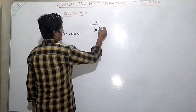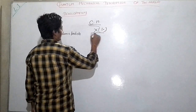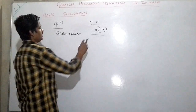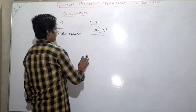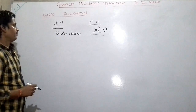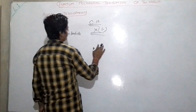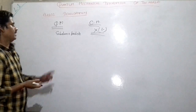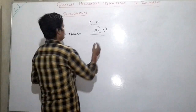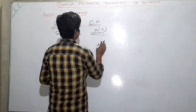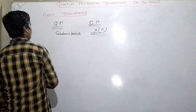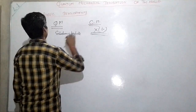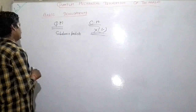In classical mechanics, x(t) — the position of a particle — is a function of time. If we solve the equation of motion, we will know the position and velocity of that particle at any later time.